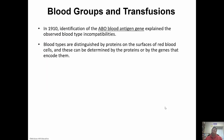Blood groups: in 1910, the ABO blood antigen gene explained our blood types. Blood types are distinguished by the proteins on the surfaces of red blood cells. On the surface of a red blood cell, we have what's called an antigen — whatever antigen you have is your blood type. And whatever antigen you have, you have the opposite antibody.